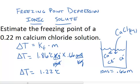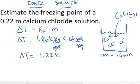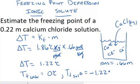So, that means that the freezing point of this particular solution is depressed by 1.22. And if the normal freezing temperature for water is equal to 0 degrees Celsius, then the freezing temperature for this particular solution is going to be equal to negative 1.22 degrees Celsius.